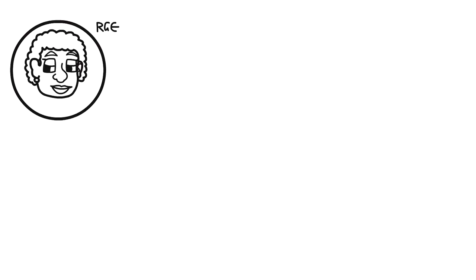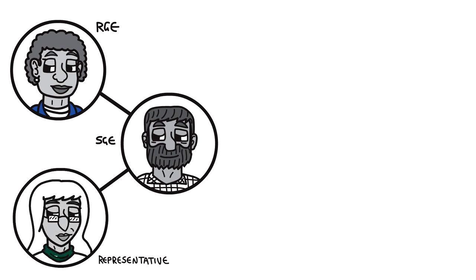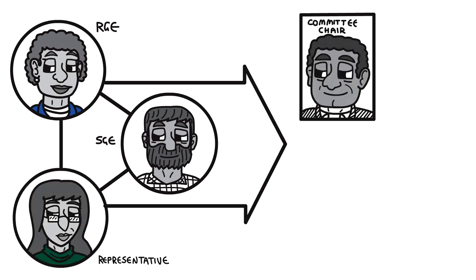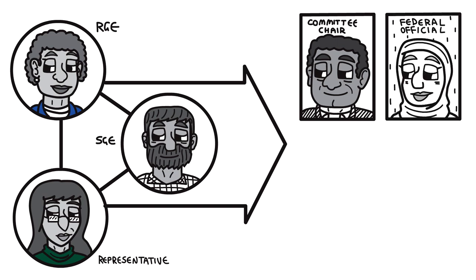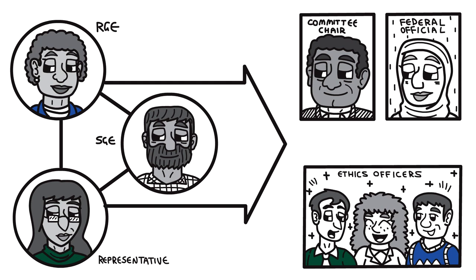And so, whether you serve as a regular government employee, a special government employee, or a representative, you're always encouraged to reach out to your committee chair, your designated federal official, or your agency's ethics officers to ask any questions or to discuss your specific situation.